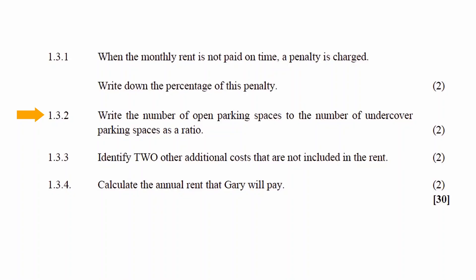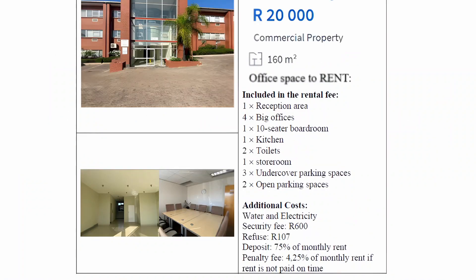In question 1.3.2, you have to write down the number of open parking spaces to the number of undercover parking spaces as a ratio. In the advertisement, the number of open parking spaces is listed as 2 and the number of undercover parking spaces is listed as 3. Since the number of open parking spaces is mentioned first, followed by undercover parking spaces, this is written as a ratio of 2 to 3.